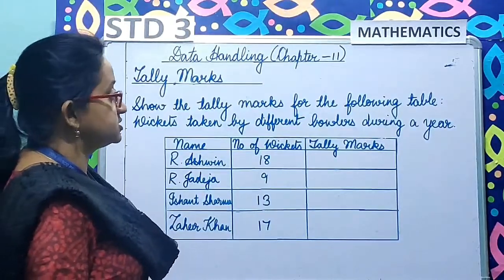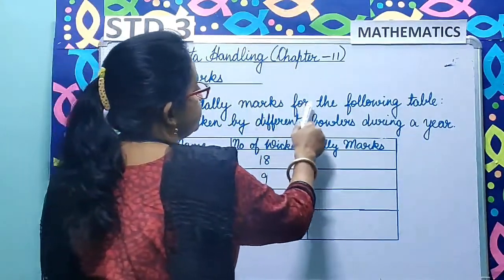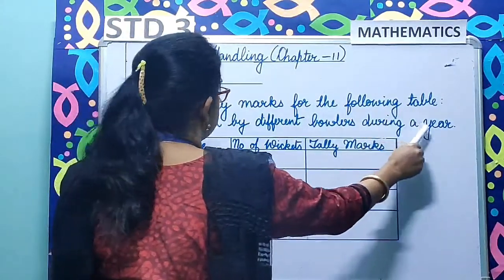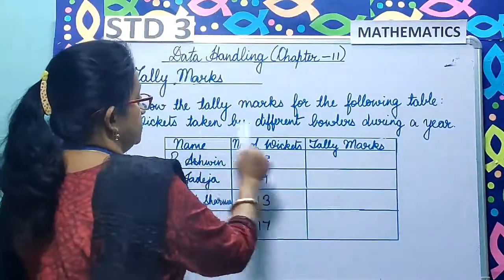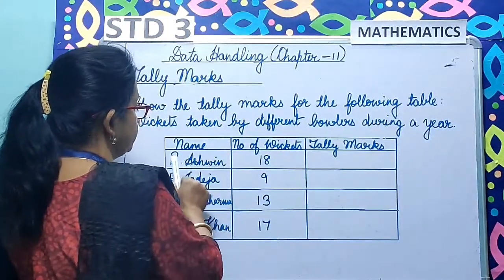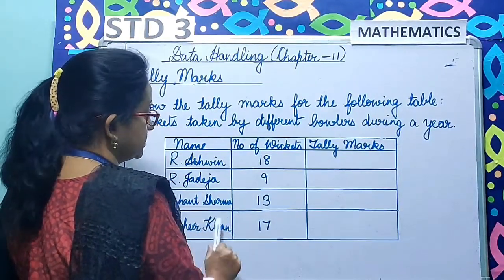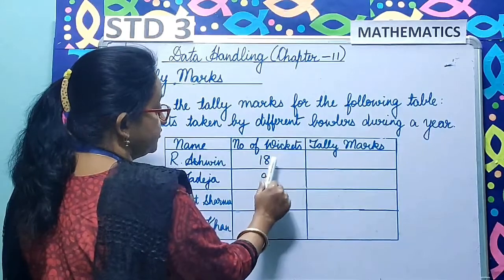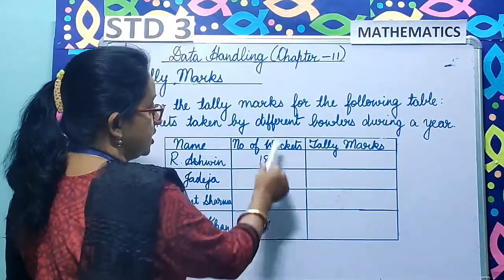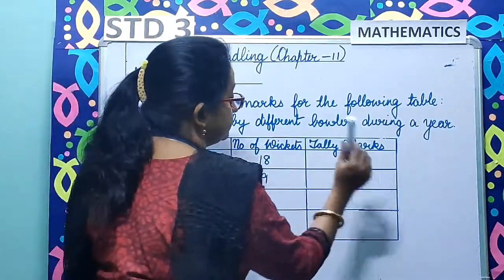Now let us solve this sum through tally marks. Show the tally marks for the following table: wickets taken by different bowlers during a year. The names of the bowlers are Ashwin, Jadeja, Ishaan Sharma, Zahir Khan. The number of wickets are 18, 9, 13, 17. You have to show this number of wickets through tally marks.